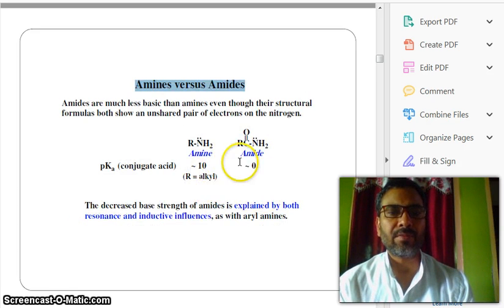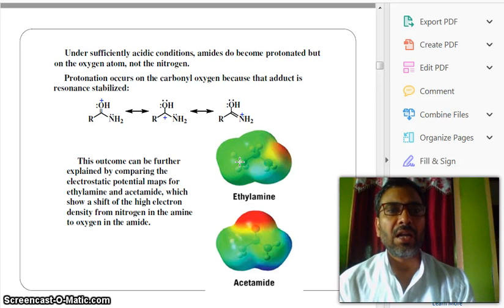Look at here. Now, under sufficiently acidic conditions, amides do become protonated, but on the oxygen atom, not the nitrogen. Look at here, oxygen positive, carbon positive, nitrogen positive. So, protonation occurs on the carbonyl oxygen, carbonyl oxygen, because that adduct is resonance stabilized.